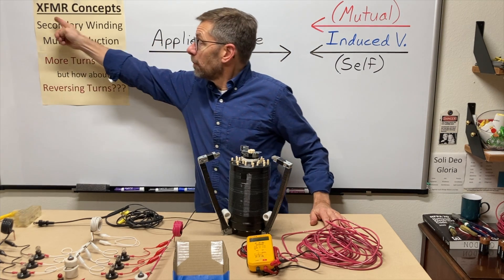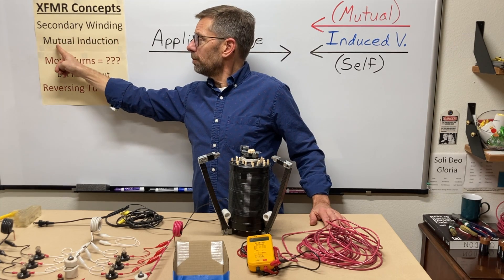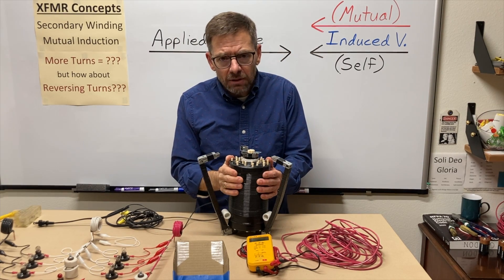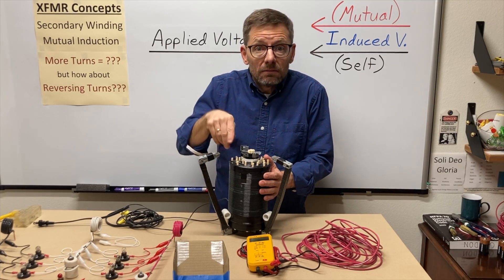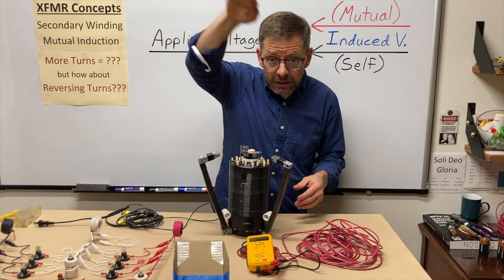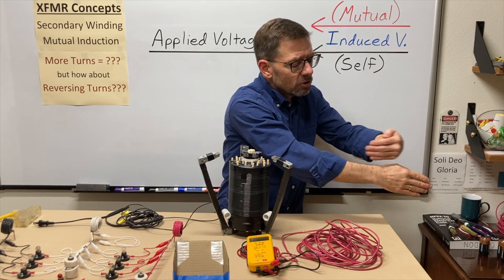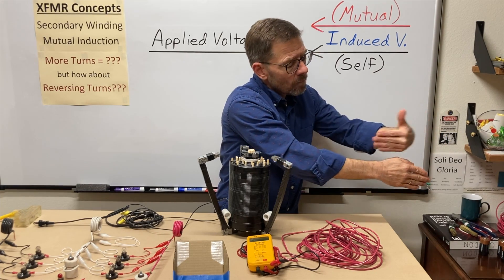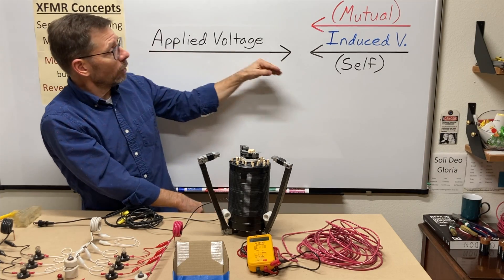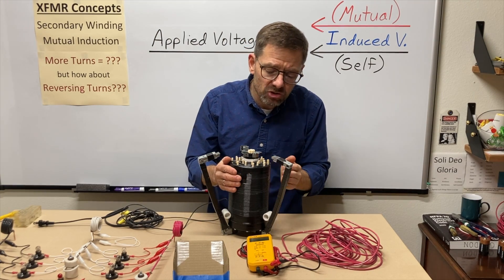This is the third video in my transformer concepts series. Here we're looking at the secondary winding and the concept called mutual induction. What we've seen so far is that the primary of a transformer is basically an inductor, a coil. If I apply an AC voltage across a coil, the current will be constantly changing, making a magnetic field that constantly changes also. That magnetic field will induce a voltage into this wire that is exactly opposite the applied voltage — Lenz's Law. We call this self-induction because it's inducing voltage into itself.